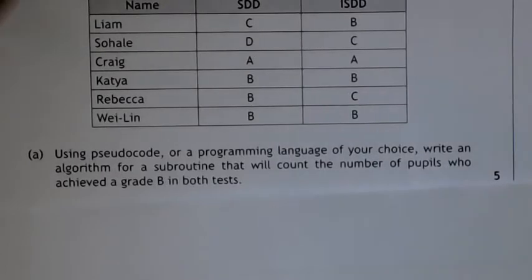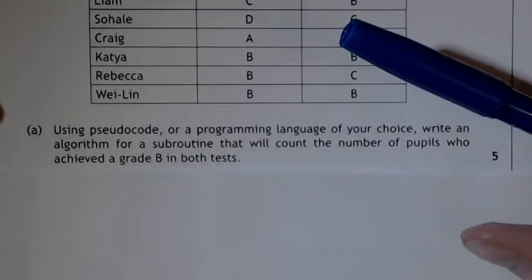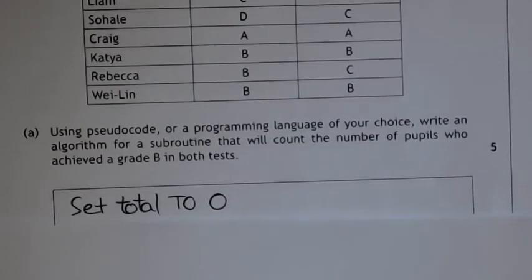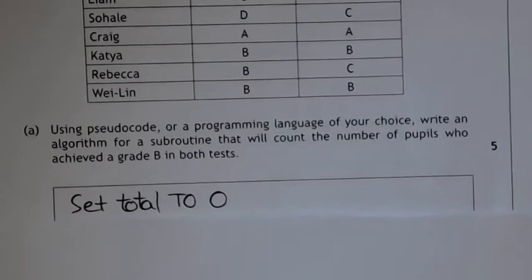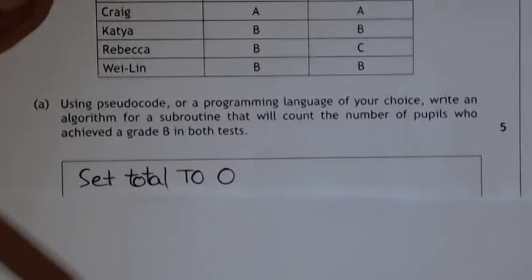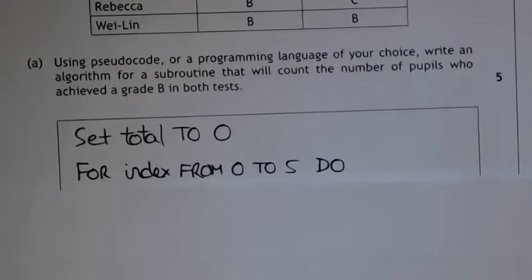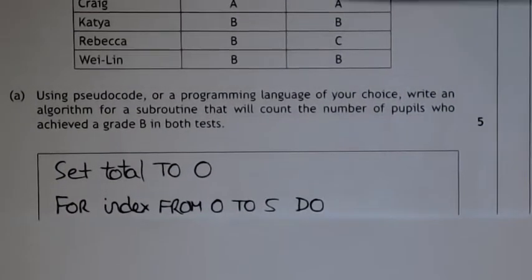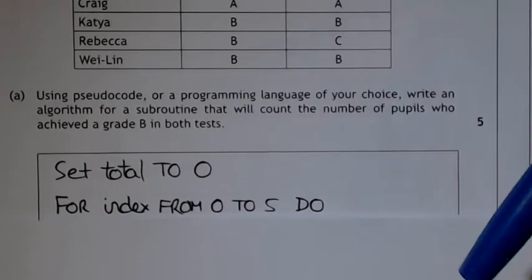Just like in any counting occurrences algorithm, the first thing you have to do is have a total and set it to zero — so you initialize the total. We then need to go through each element in the array and investigate it to see if this array has got a B in it and this array has also got a B.